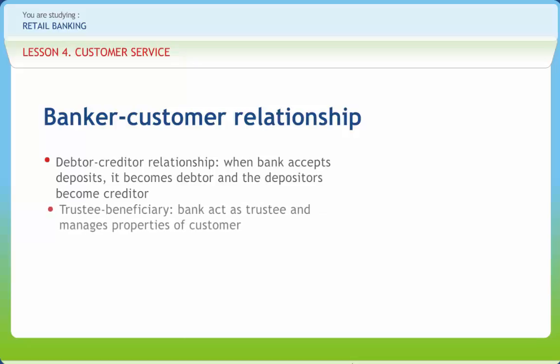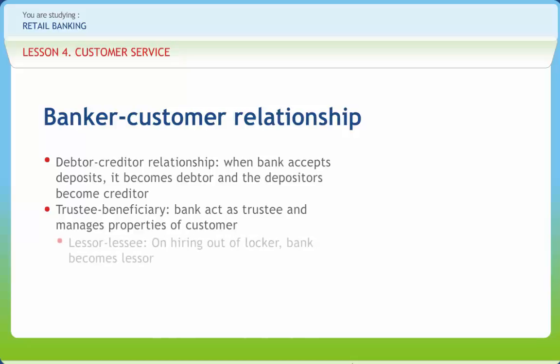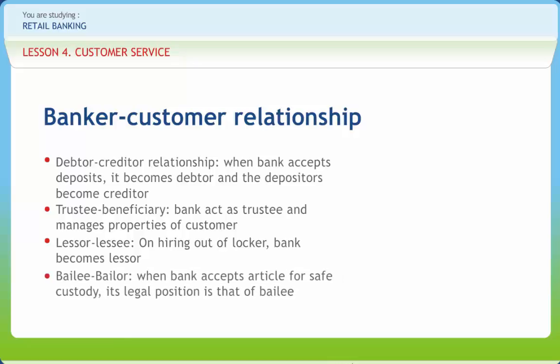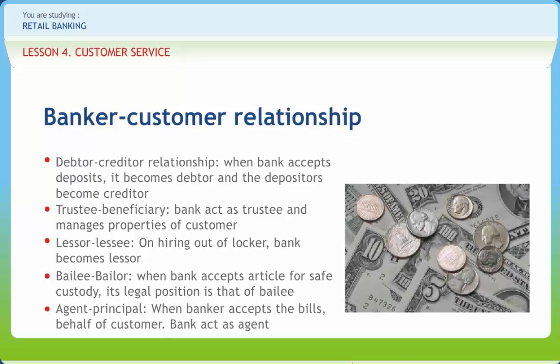Next is trustee-beneficiary: banks may also act as trustee. The position of a bank will be that of a trustee when a person having no account with a bank deposits money with instructions to retain it till further instruction. Next is lessor-lessee: on hiring out of a locker, the bank becomes the lessor and the hirer a lessee, and the relationship is that of landlord and tenant. Next is bailor-bailee: when a bank accepts an article for safe custody, its legal position is that of bailee, who is duty-bound to take as much care of the goods bailed as a man of ordinary prudence would under similar circumstances. Next is agent-principal: when the banker accepts bills for collection on behalf of his customer, he acts as an agent.